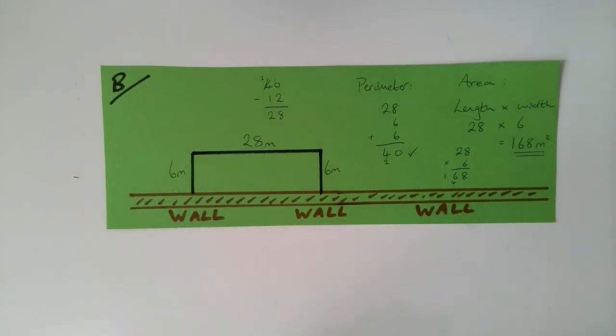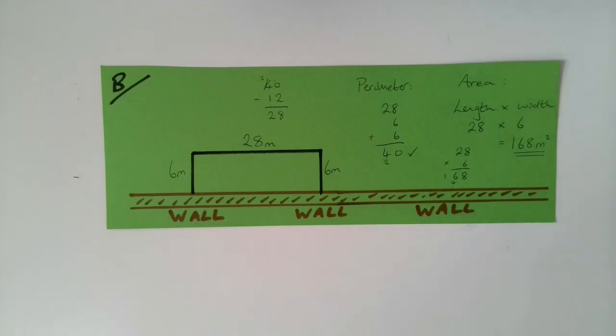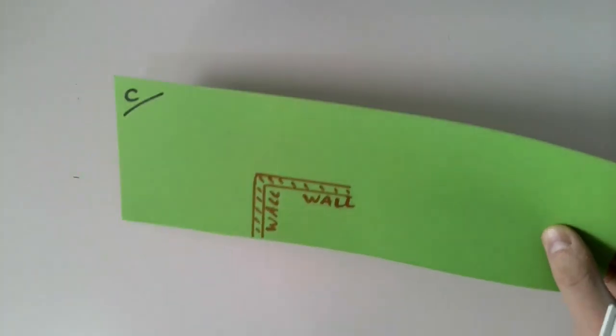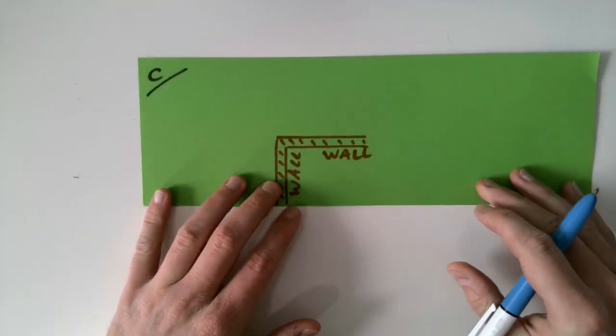That's problem B. Similarly to problem A, I'd like you to go away and try different sized enclosures. Remember that the wall acts as one of your sides for this problem. Again, the aim is to find the enclosure with the largest area. Pause the video now, have a go at problem B, and restart the video when you're ready to move on to the final part of this lesson.